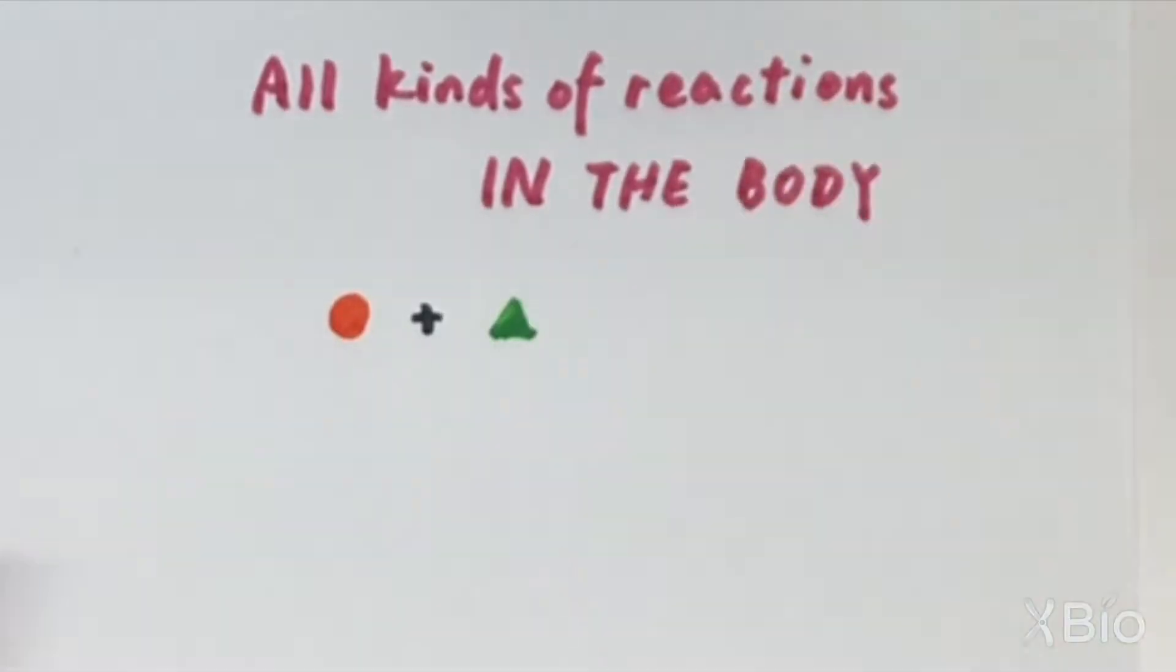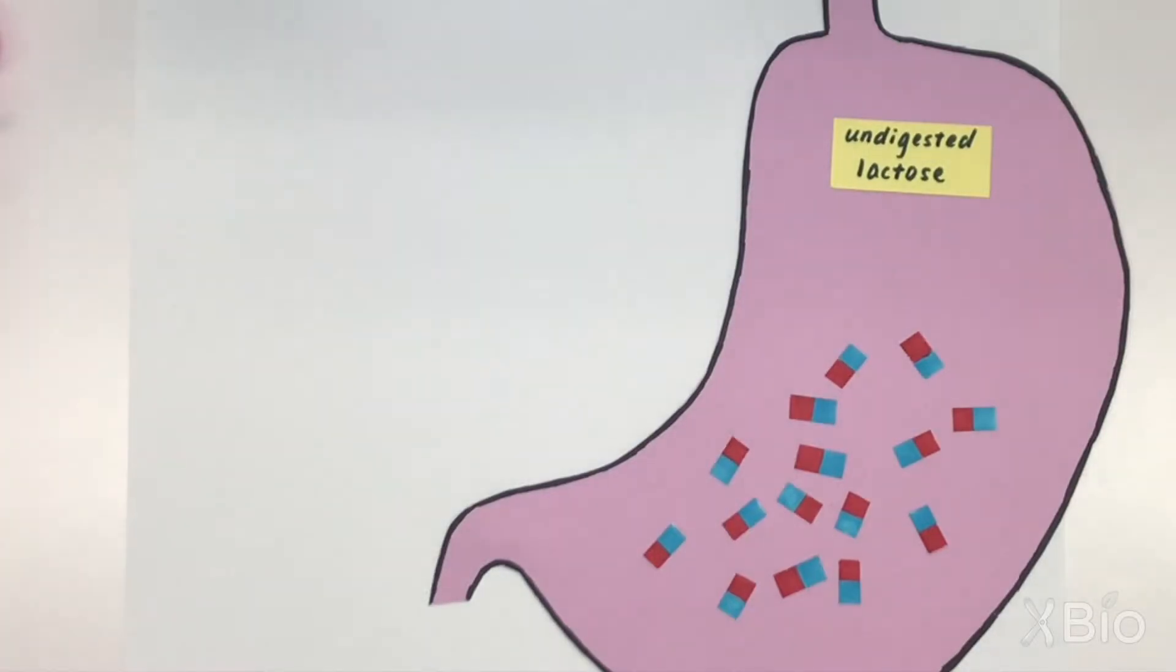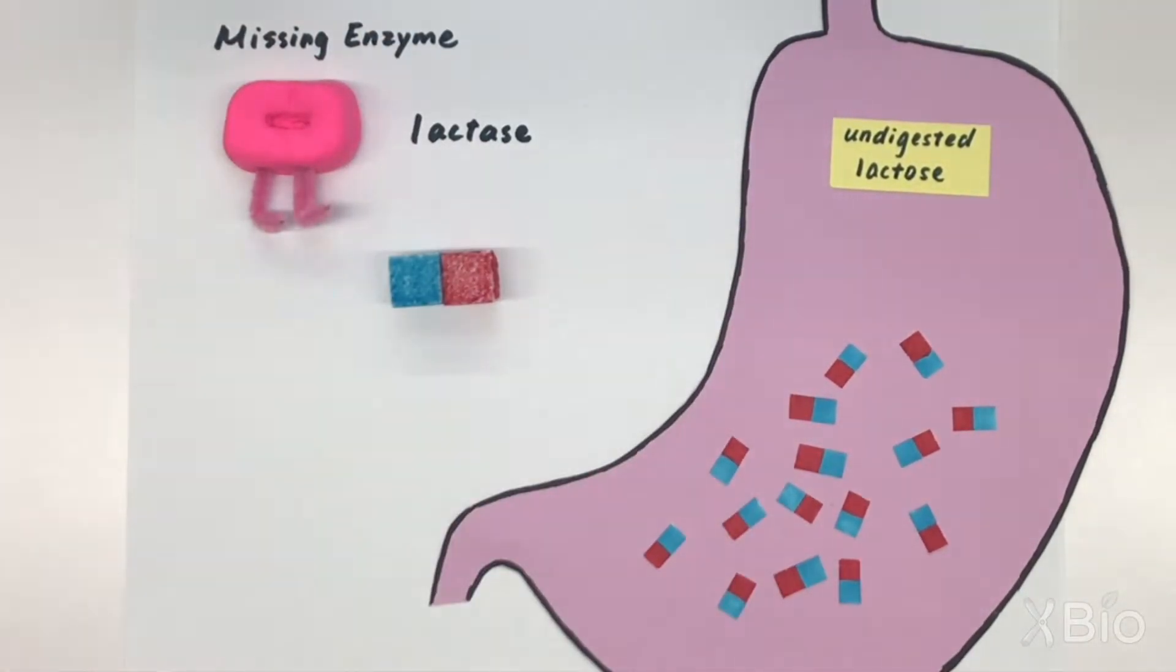Enzymes are proteins that speed up all kinds of different chemical reactions in the body. Some enzymes, like lactase, help break things apart, while other enzymes help put things together.